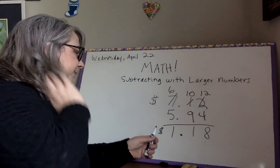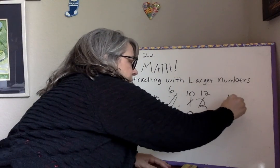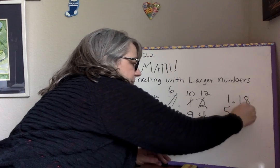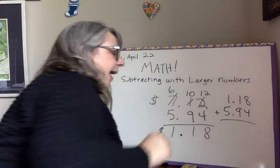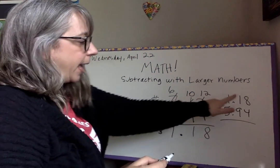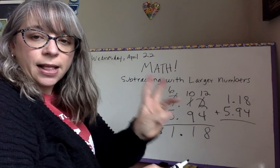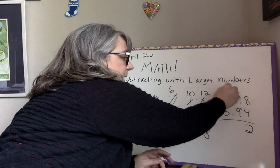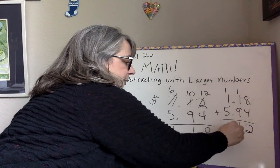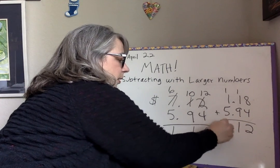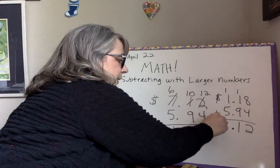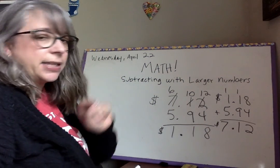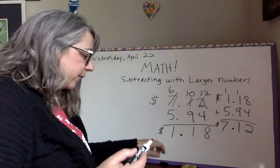Let's check by adding. Eight plus four is twelve, carry one. One plus nine plus one is eleven, carry one. Drop down that decimal. Five plus six is eleven... wait, five plus one is six, plus one is seven. So seven dollars and twelve cents — seven dollars and twelve cents. Correct!